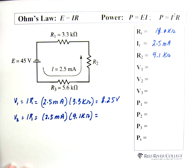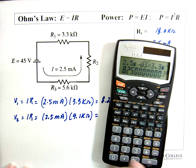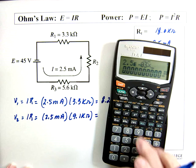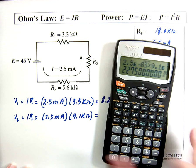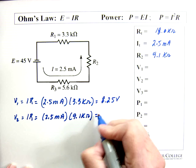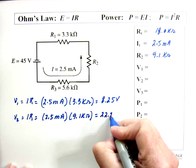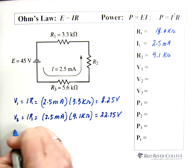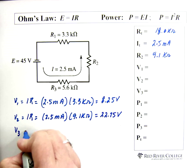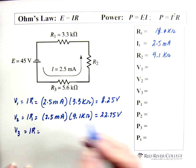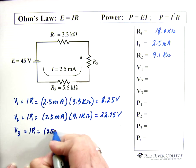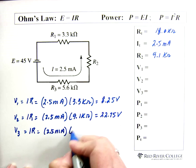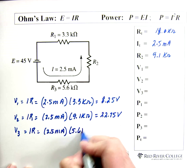So 2.5 exponent negative 3 times 9.1 exponent 3 equals 22.75 volts. And voltage 3 equals, again, IR,